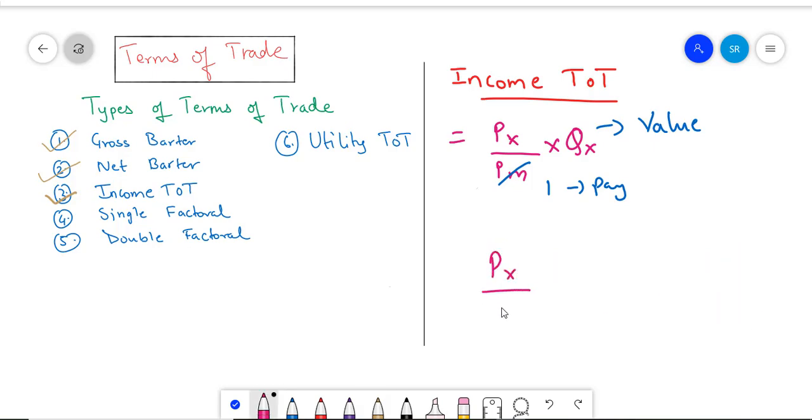Hence, by constructing the index this way, we come to know the quantity of imports one needs to do to have the value of exports and imports equal to each other.